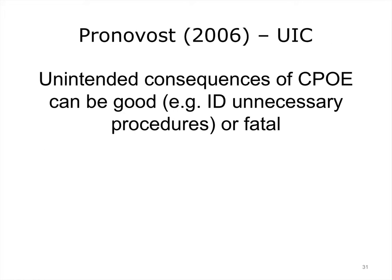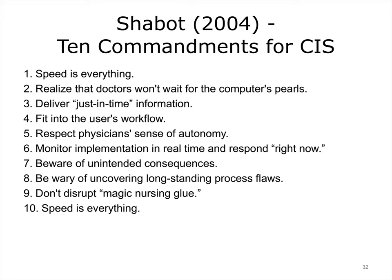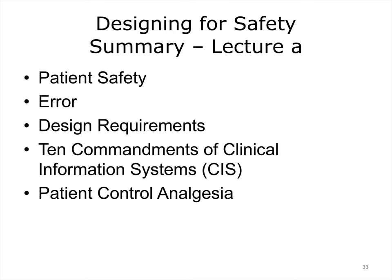Unintended consequences of CPOE can be good, such as when implementation leads us to identify unnecessary procedures, or fatal, as seen in the pediatric unit example. While it is impossible to predict every consequence, thoughtful consideration of probable effects, inclusion of all staff who are affected, their input into the decision-making process, and implementation which has procedures in place for feedback with time for correction are important in planning. Good adoption of clinical information systems involves using certain key principles. This concludes Lecture A of Usability and Human Factors Designing for Safety, in which we discussed patient safety, errors that can impede patient safety, and various studies on order sets and patient safety.